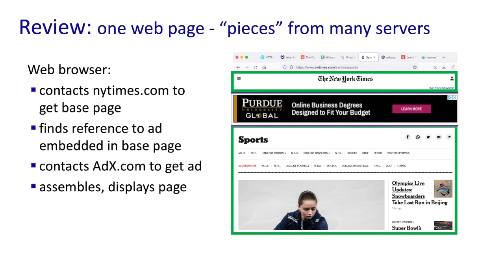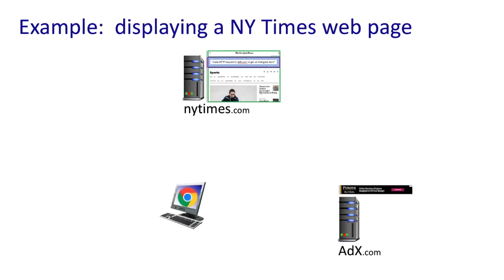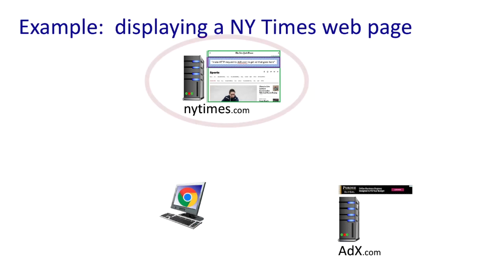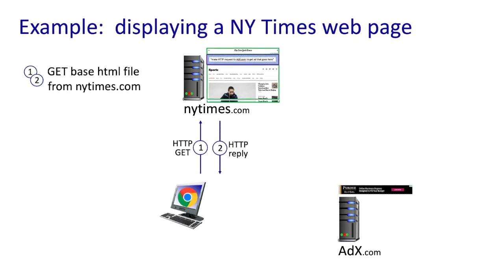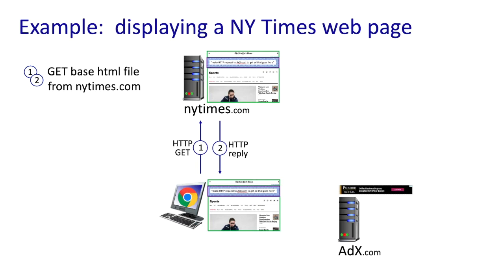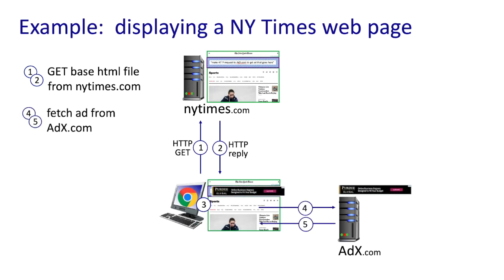Let's take a look at the exchange of HTTP messages. We've got my browser, the NewYorkTimes.com web server, and the adx.com web server. In step one, my browser uses an HTTP GET message to request the base page from NewYorkTimes.com. The Times web server responds with an HTTP reply containing the base HTML file. In step three, my browser parses the HTML file and finds the reference to adx.com. In steps four and five, HTTP GET and HTTP reply messages are used to request and receive the ad content from adx.com — in this case, an ad for purdueglobal.com. In step six the page is assembled, and in step seven it's displayed.